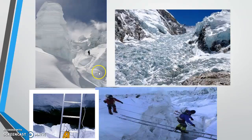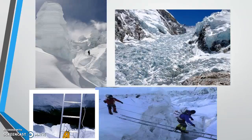Every time they go through the Khumbu Icefall they have to do this multiple times — they go up to Camp 1 and back to base camp, then up to Camp 1 and Camp 2 and back to base camp for acclimatization purposes. So every time they go up to Camp 1 they have to climb through the Khumbu Icefall. It's a really, really scary and terrifying situation.